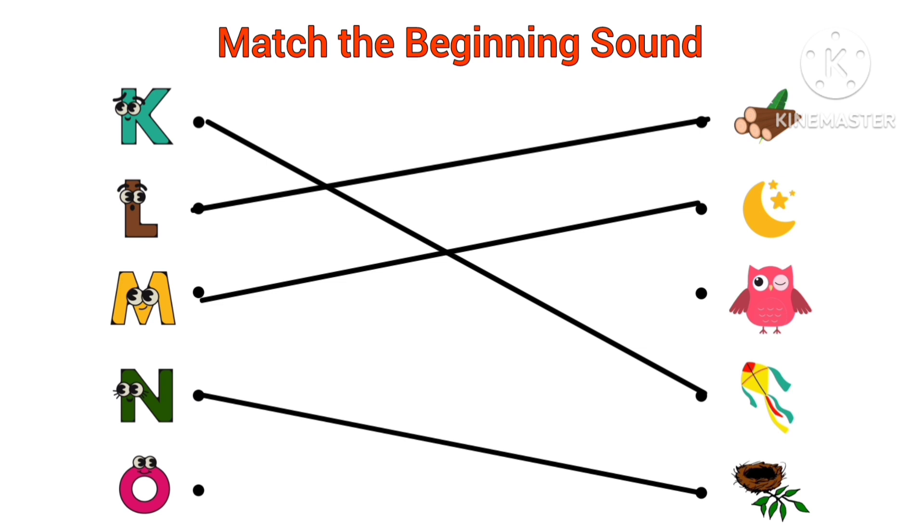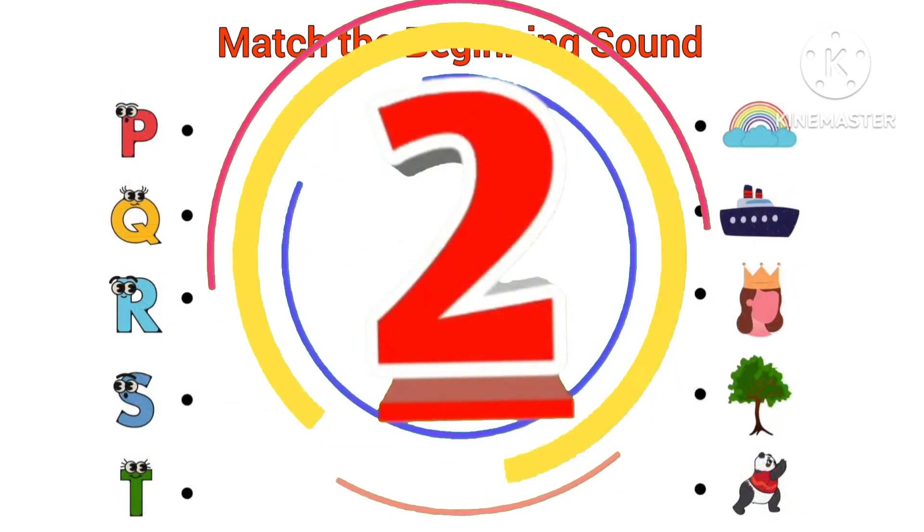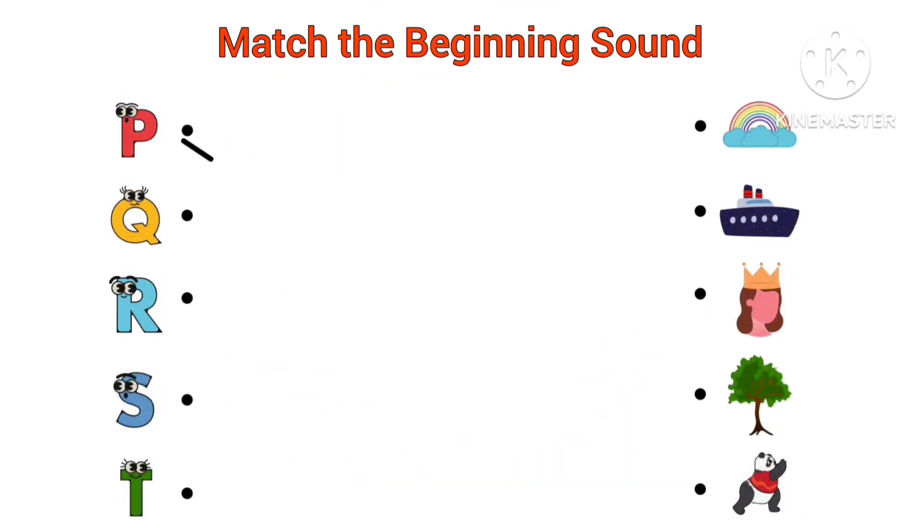O, O for owl. Beginning sound of owl is O. P, P for panda. Beginning sound of panda is P.